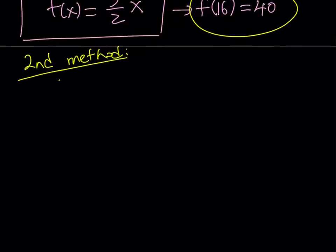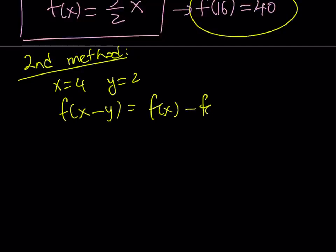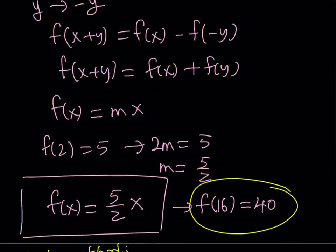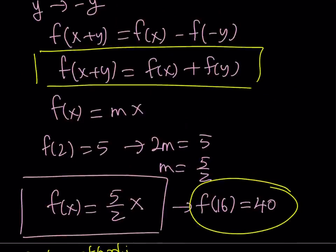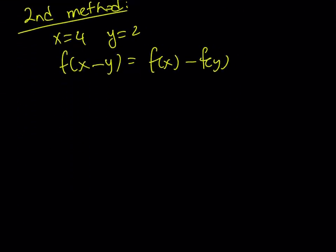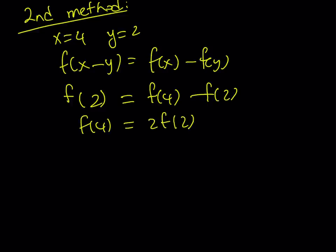Here's what I'm going to do. I'm going to replace x with 4 and y with 2. Let's remember our original expression: f of x minus y is f of x minus f of y. I'm going to replace x with 4 and y with 2. That's going to give me f of 4 minus 2, which is f of 2, equals f of 4 minus f of 2. This means that f of 4 equals 2 f of 2. And since I know that f of 2 is equal to 5, from here I'm getting f of 4 equals 10.